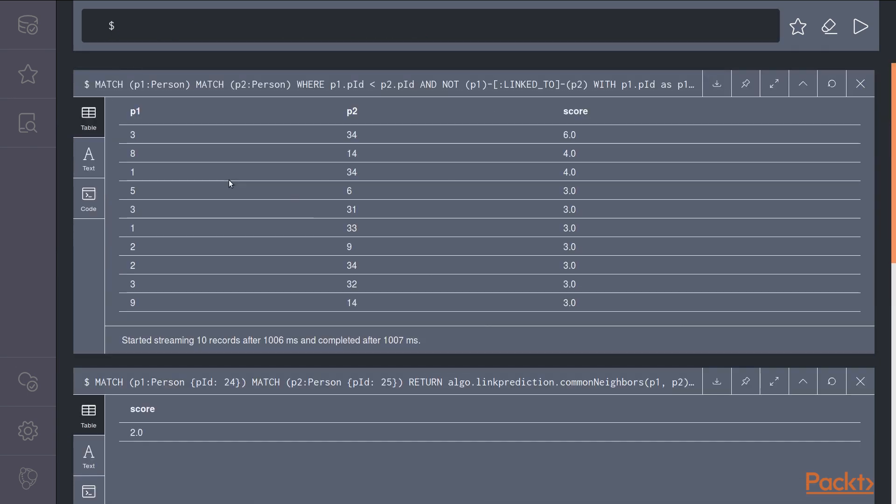So this algorithm says that the persons most likely to be connected are person IDs 3 and 34 with a score of six, meaning they already have six common neighbors.